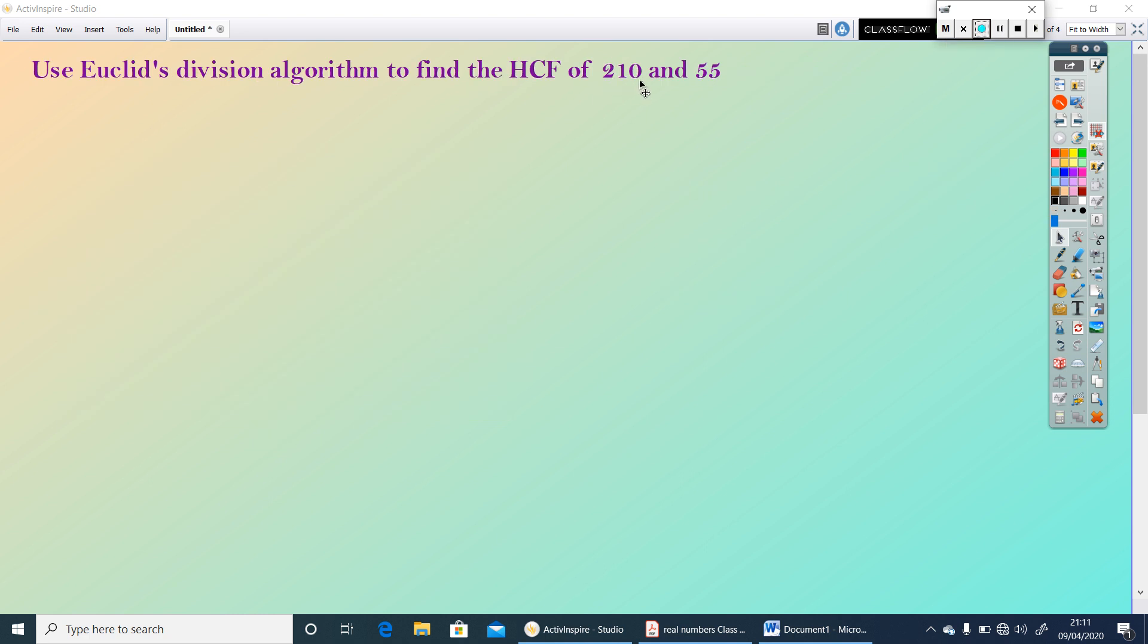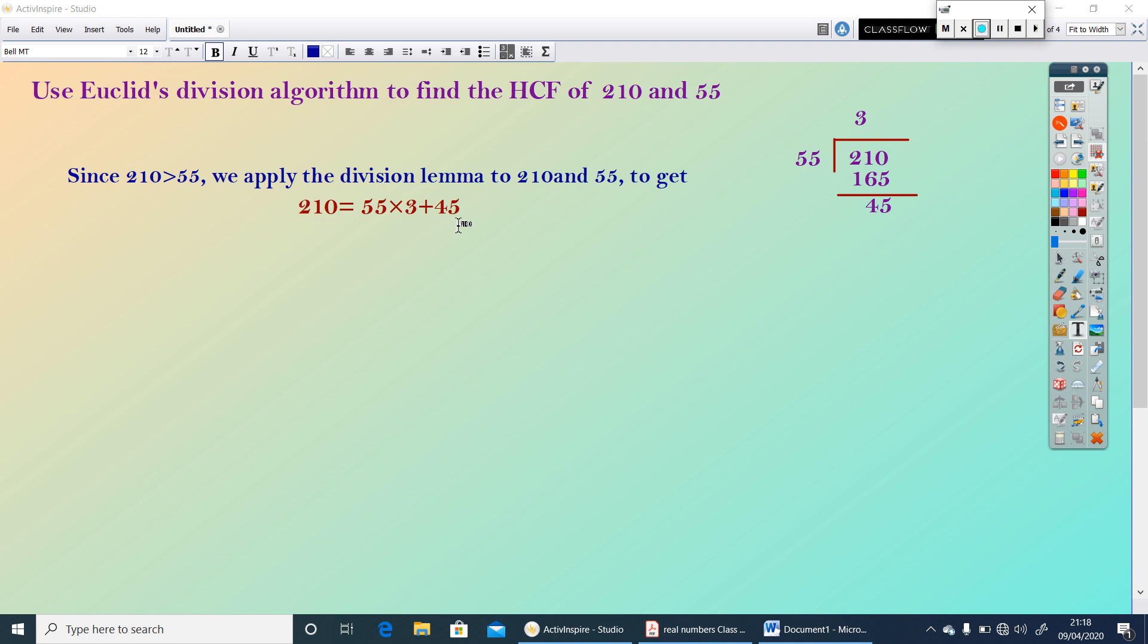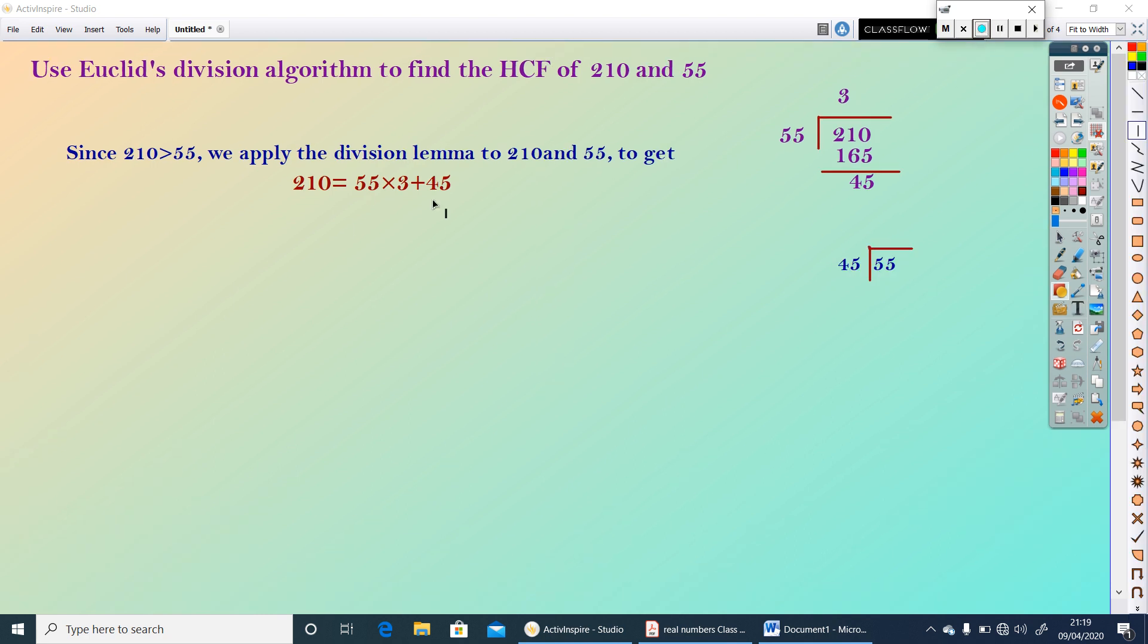Here, we have two numbers, 210 and 55. You have to find out the HCF of these two numbers by using Euclid's division algorithm. Since 210 greater than 55, to use Euclid's division lemma on these two numbers, first we have to divide 210 by 55. We apply division lemma to 210 and 55. To get 210, we can write it as 55×3+45.